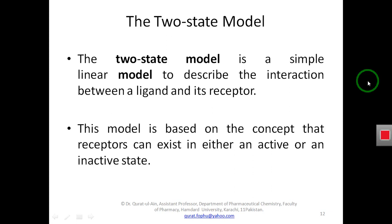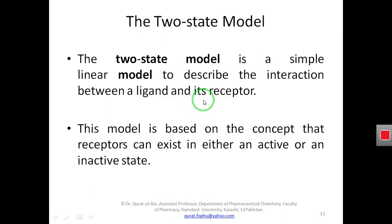Now my dear students we are going to discuss the third theory, which is the two-state model. As the name suggests, this theory describes two states of the receptor: one is the relaxed state of the receptor and the other is the tense state of the receptor. We will see how this theory describes the interaction of the drug with these two states of the receptor. This theory is a simple linear model describing the interaction between a ligand and its receptor.